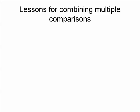Our lessons today for combining multiple comparisons in a visual: First, because you are comparing against more than one other item, you have to determine what is the common axis. In this case it was dollars — we measured everything against $100 for the largest column in the graph, then down from there because we were dealing with percentages. Determine what is that common axis for the graph.